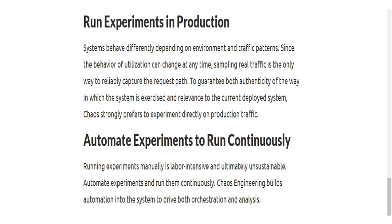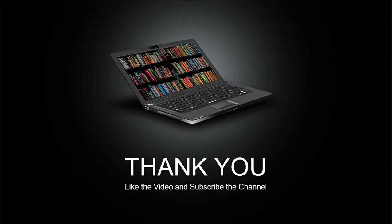Should you run chaos testing in production or in a QA environment? Ideally you should experiment in production or a similar environment, because systems behave differently depending on the environment and traffic patterns. Since utilization behavior can change at any time, sampling live traffic is the only way to reliably capture the request path and guarantee authenticity. Chaos engineering strongly prefers experimenting directly on production traffic — as Netflix does. You can also automate the experiments to run continuously or schedule them. Running experiments manually is labor-intensive and ultimately unsustainable. Chaos engineering builds automation into the system to drive both orchestration and analysis.